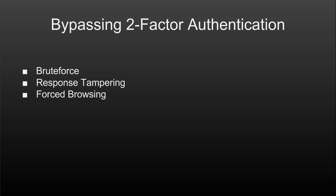The next method is forced browsing. Most of the time the application is not properly validating the authentication flow. Like if a site is asking for 2FA and we directly access the settings, it is possible that we can bypass the protection. Many bug bounty platforms were vulnerable to this kind of bypass — just like we discussed in the previous lesson where we bypassed login panels using the forced browsing technique, where we enumerated and accessed files directly.